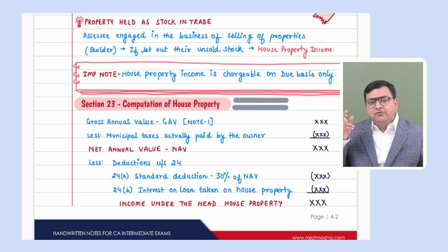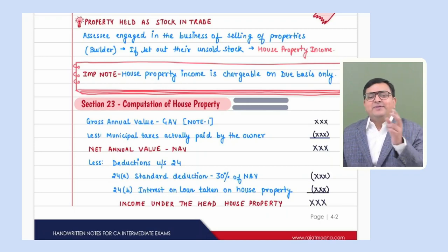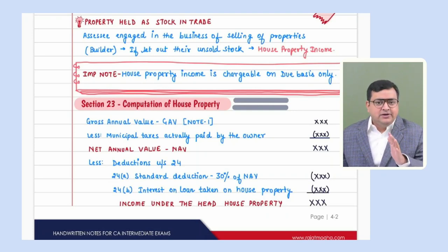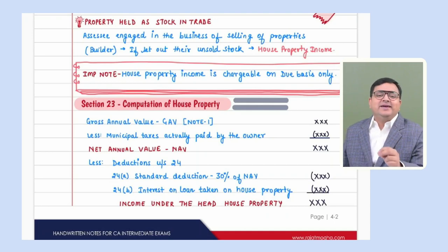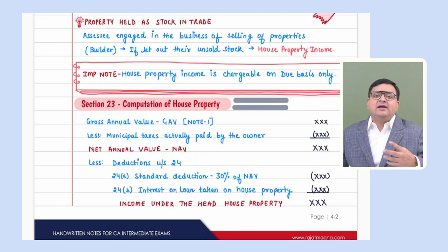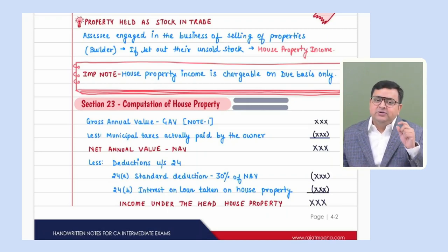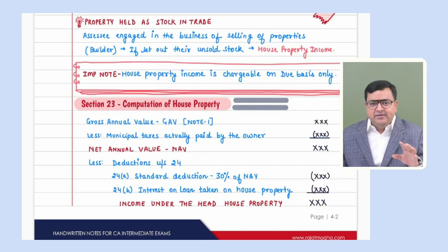Municipal taxes are allowed only on payment basis — only on cash basis. If you paid on 1st April 2024, that is next year — please don't look at the due date of ROI here, that is a PGVP concept. It should be paid specifically in the previous year itself. Even if it is paid on 1st April (the very next day after the previous year), please don't allow it. Only those municipal taxes paid by the owner should be deducted, not those paid by the tenant.